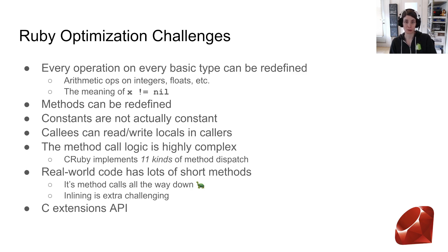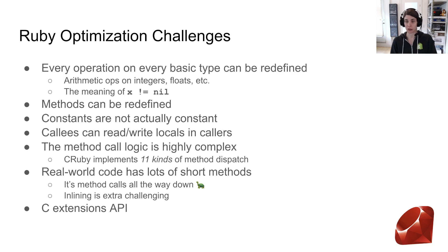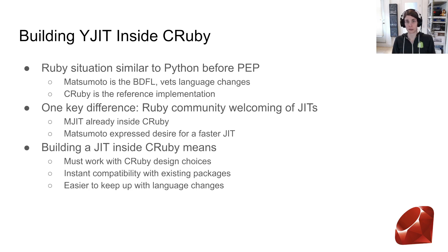Real-world code has lots of short methods, which makes inlining all the more necessary, but it's pretty difficult due to the reasons outlined above. Finally, there's the C extensions API — a lot of code is written in C, which imposes a barrier on what you can optimize in a JIT compiler. Ruby has a situation politically similar to Python before the PEP standardization process, where Matsumoto is the BDFL who vets language changes and CRuby is the reference implementation. One key difference is that the Ruby community has been very welcoming of JIT compiler implementations and understands they're important for the future success of the language.